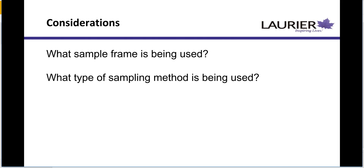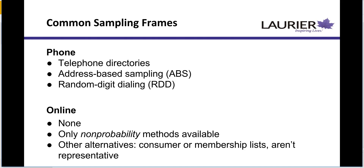One consideration is to ask what sample frame is being used, because the sample frame will inform our sample. A good, accurate sample frame leads to better quality samples. And then of course there's the type of sampling method — using random samples or non-random samples — what exactly are we doing to sample our population? Because that will have its own set of positives and negatives as well.